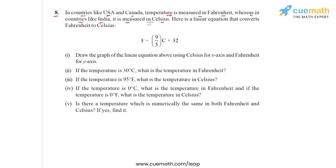The question gives us a linear equation that converts Fahrenheit to Celsius: F is equal to 9/5 times C plus 32. This is the linear equation that relates F and C and helps us convert between Fahrenheit and Celsius. We then have five sub-questions to solve.